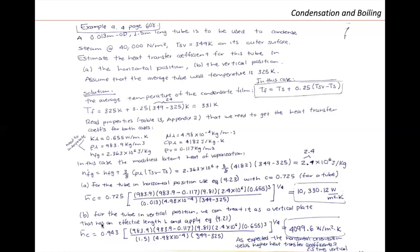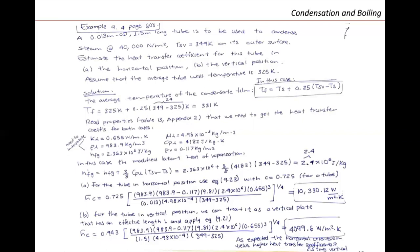For the vertical position, we treat this geometry as a vertical plate with effective length L and apply equation 9.21. Using the same modified latent heat of vaporization, we get a convective heat transfer coefficient of approximately 4,000 W/m²·K. As expected, the horizontal orientation yields a heat transfer coefficient about 2.5 times that of the vertical orientation.